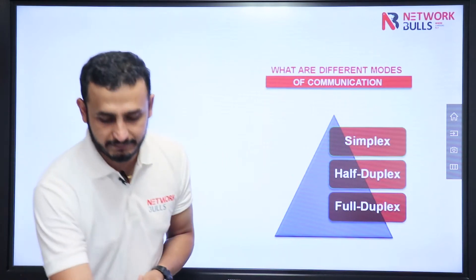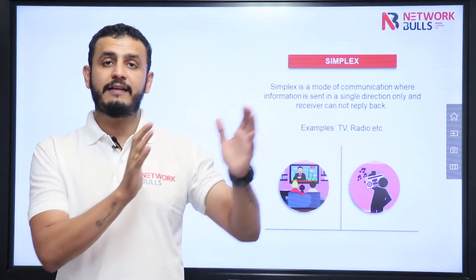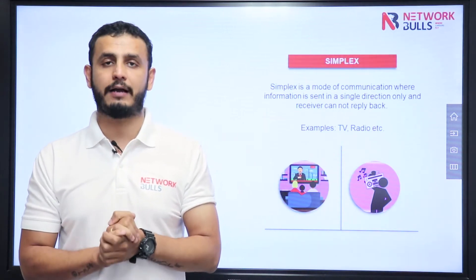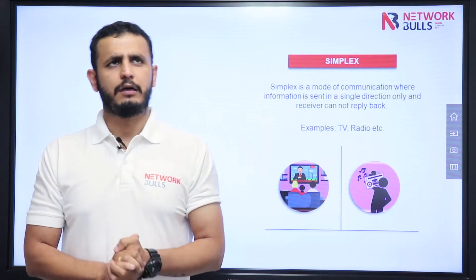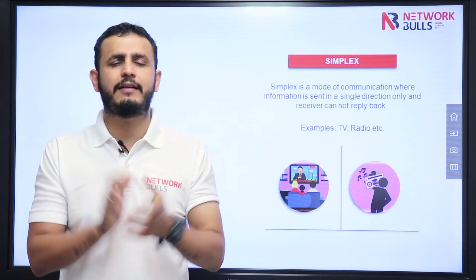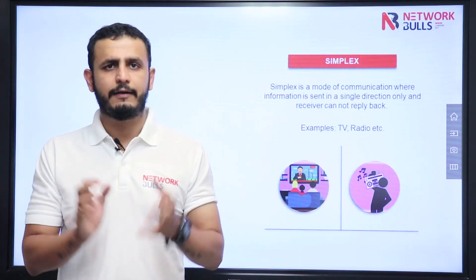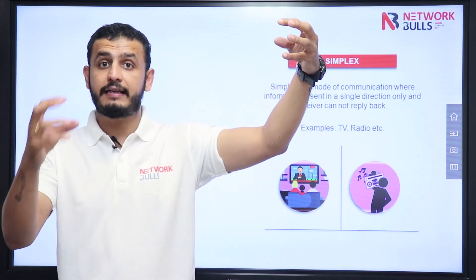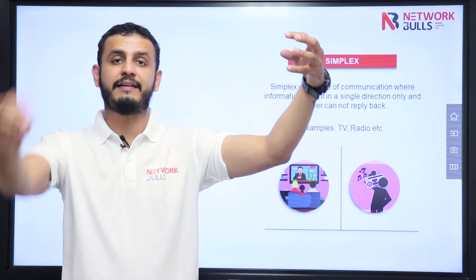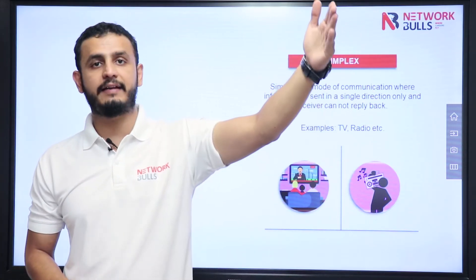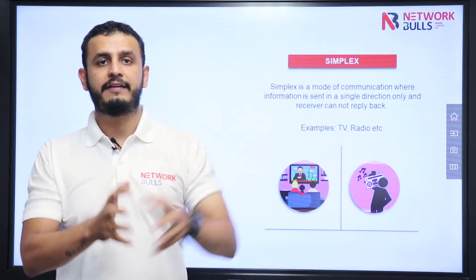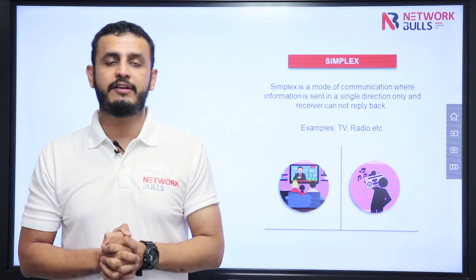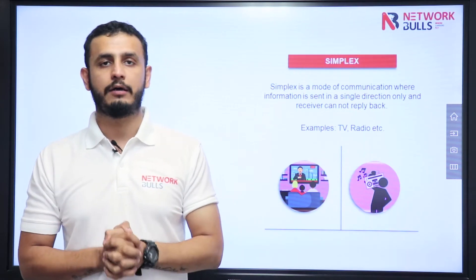If I talk about simplex, simplex means sender can send, receiver can receive. Receiver cannot transmit back. Let me give you an example. All of you watch television, so you have seen a satellite is sending signals to your television. Television cannot transmit back any signal. So this is simplex — satellite is sending, television is receiving. Sender will always be the sender, receiver will always be the receiver. This type of communication is called simplex.